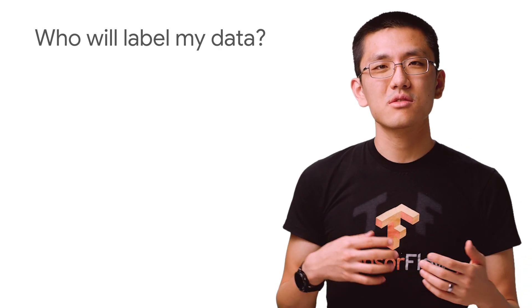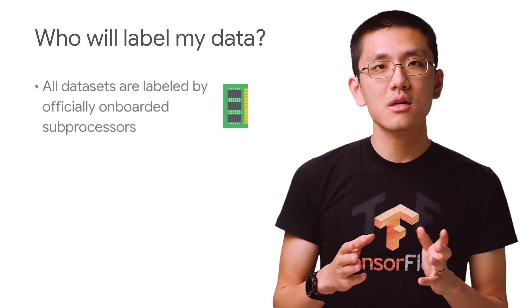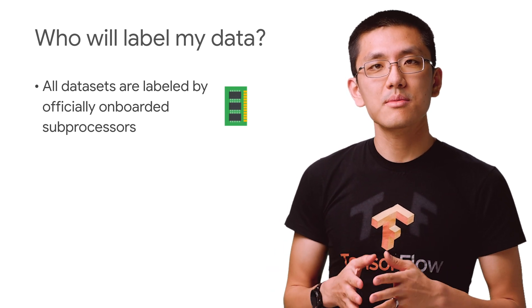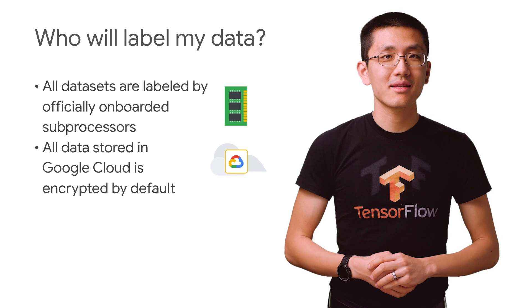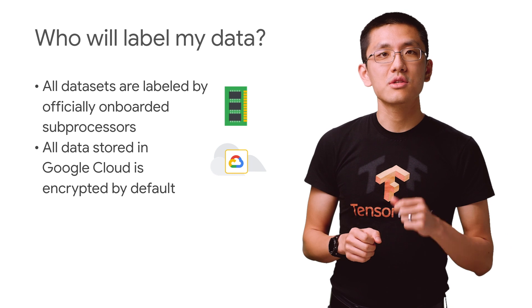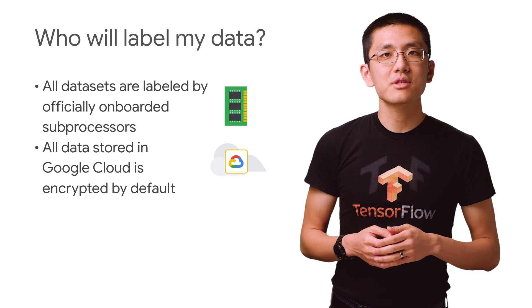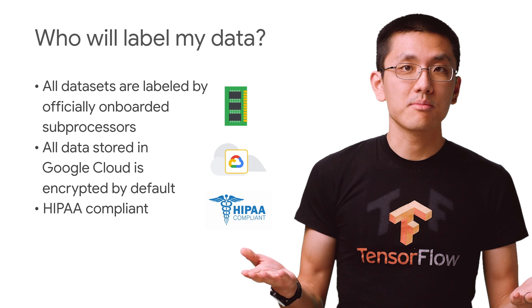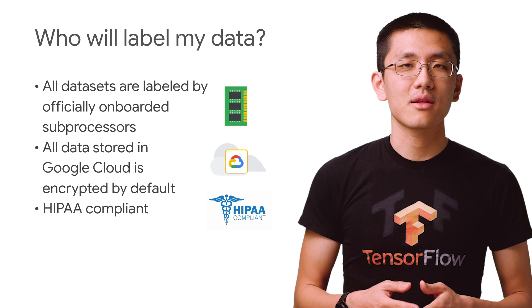All datasets are labeled by officially onboarded sub-processors, and you can find more information at the GCP data processing and security terms. Anytime you're transmitting data, the security and protection of that data is paramount. All data stored in Google Cloud is already encrypted by default both in transit and at rest. Human labelers can only view your data during labeling. The Data Labeling Service is also HIPAA compliant, so for those of you working with sensitive healthcare data, rest assured that it will be handled in a proper manner.